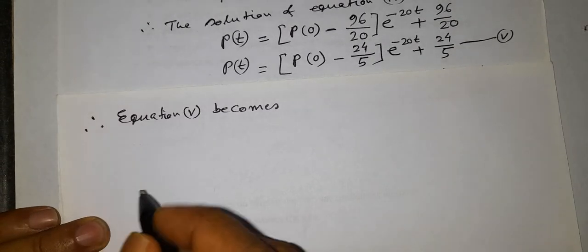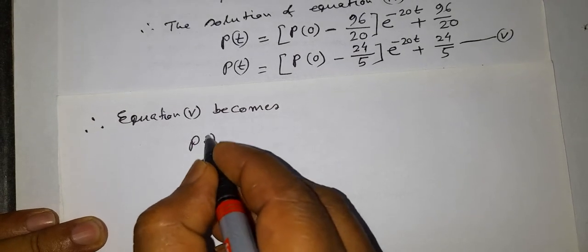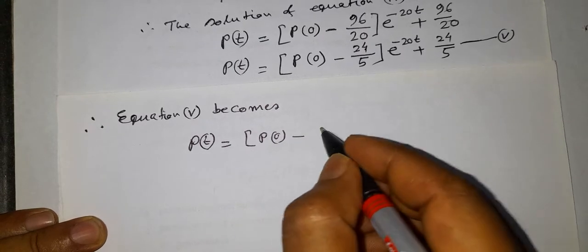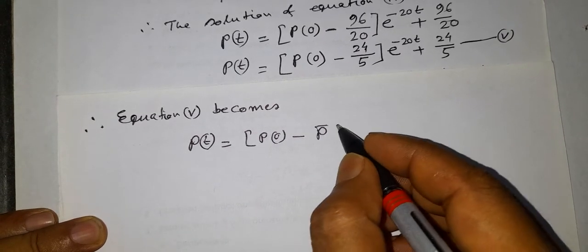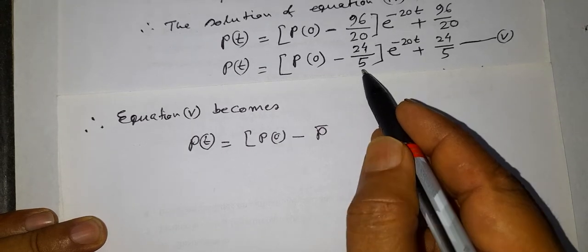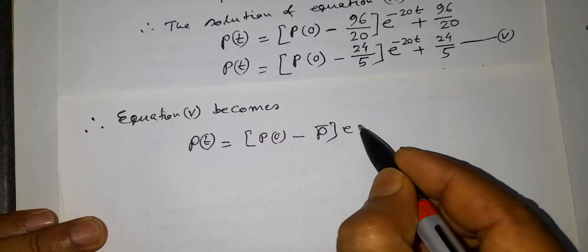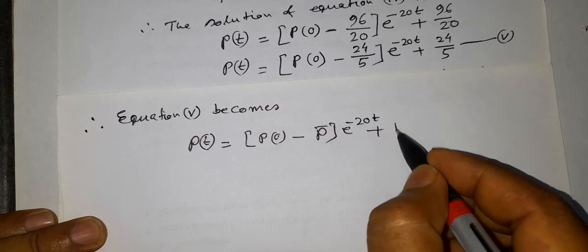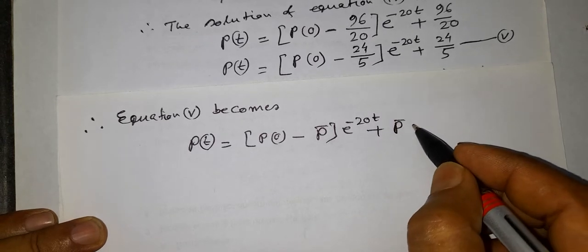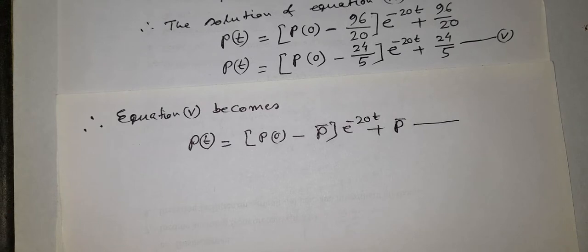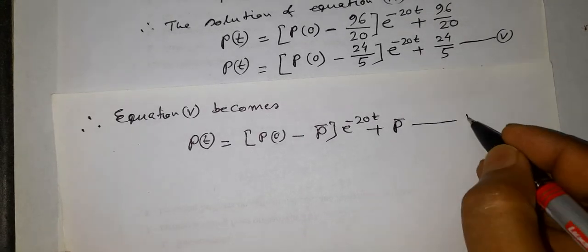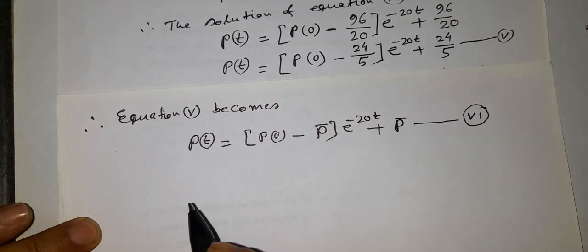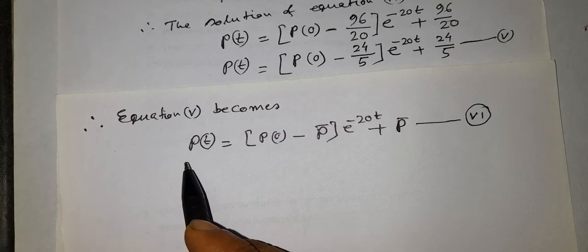Therefore, equation 5 can be rewritten as p(t) = [p(0) − p̄] · e^(−20t) + p̄, where p̄ = 24/5. This is equation number 6, called the time path of price p(t).